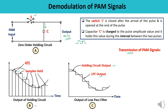One more important point concerns the transmission of PAM signals. When PAM signals are to be transmitted directly via a pair of wires, no further processing is required. But when PAM signals are to be transmitted through space using an antenna, they must first be amplitude, frequency, or phase modulated by a high frequency carrier.